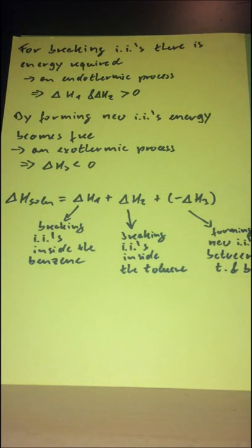For breaking IIs, energy is required—it is an endothermic process. Delta H1 and delta H2 are greater than zero. By forming new IIs, energy becomes free—it is an exothermic process. Delta H3 is less than zero. So delta H solution is defined as delta H1 plus delta H2 plus delta H3, because delta H3 is less than zero.